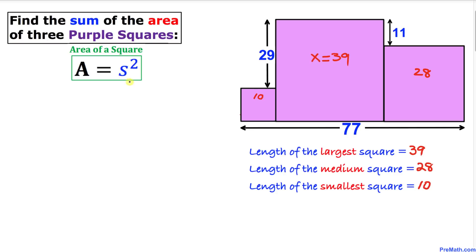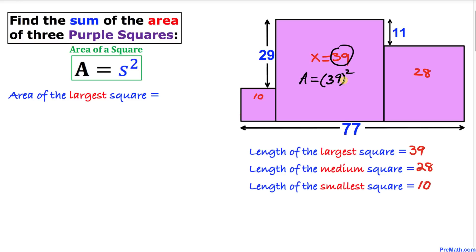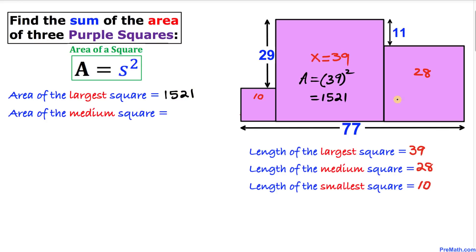For the final step, let's recall the area of a square formula: A equals s squared, where s is the side length. Now we calculate the area of each square individually. The largest square has side length 39, so its area is 39 squared, which equals 1521.